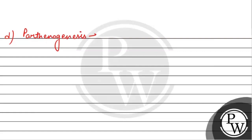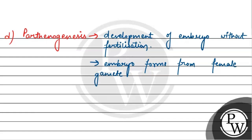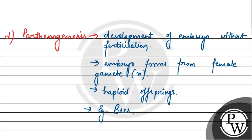Next option baat karta hai Parthenogenesis ke baare mein. Parthenogenesis mein kya hota hai ki development hoti hai embryo ki — embryo form hota hai, lekin isme bhi fertilization nahi hoti — development of embryo without fertilization. Embryo form hota hai female gametes se — embryo forms from female gametes. Jo female gametes haploid hoti hain unhi se offsprings bante hain, that means jo offsprings honge woh haploid honge. Parthenogenesis hoti hai lower invertebrates mein, lower plants mein, and bees mein bhi hoti hai.